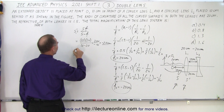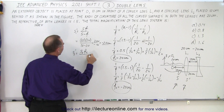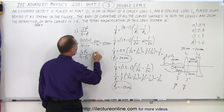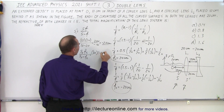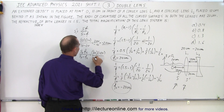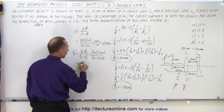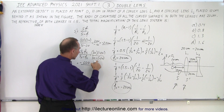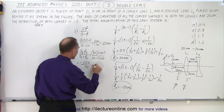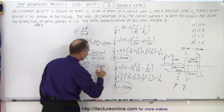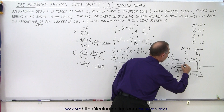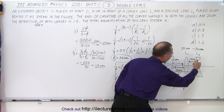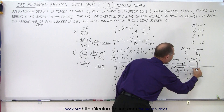For the second lens, S2' equals S2 times f2 divided by S2 minus f2. That would be 30 times negative 20 divided by 30 minus negative 20, which equals negative 600 divided by positive 50, giving minus 12 centimeters. So the final image is 12 centimeters to the left of the second lens.